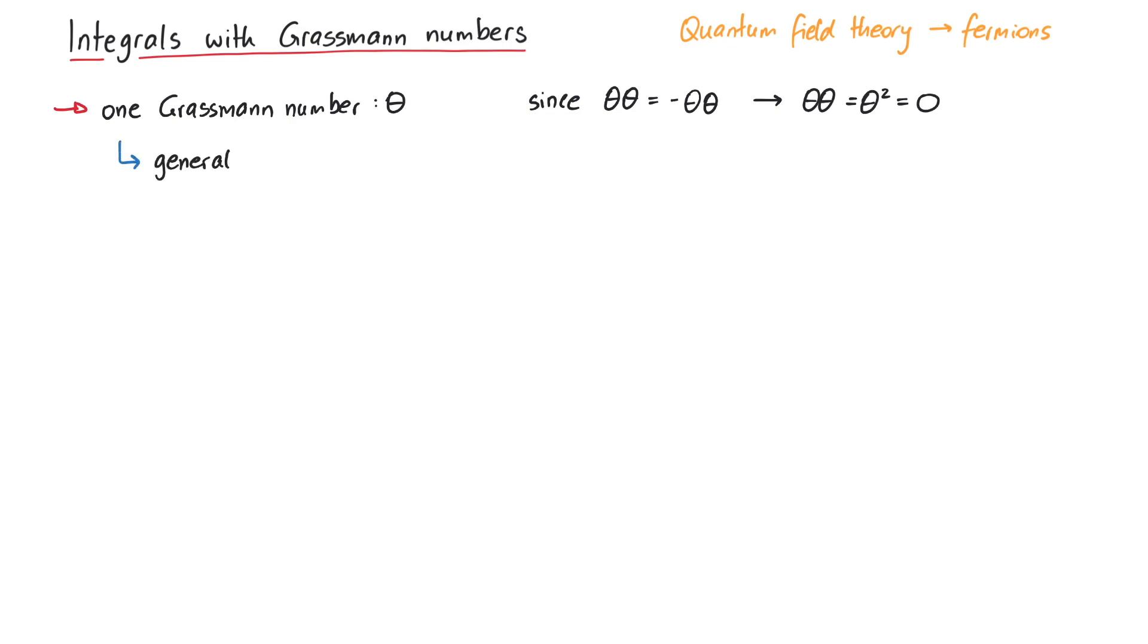Therefore, any function of this single Grassmann number can only look like this, where we have one constant term and one term with theta. Any higher terms, like theta squared or theta cubed, are zero, because theta is a Grassmann number.